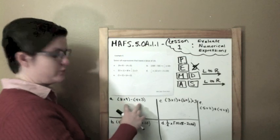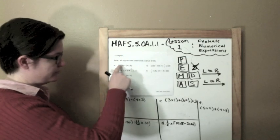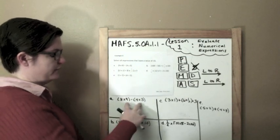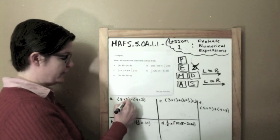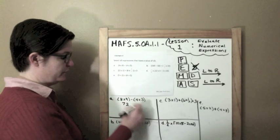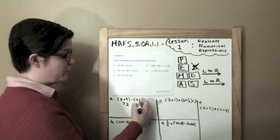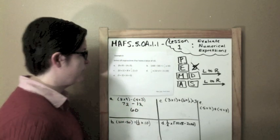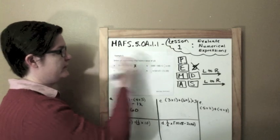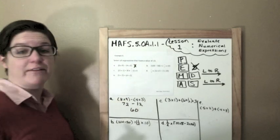All right. So first, I've got two sets of parentheses here. This is a. So I'm going to solve them. And I'm going to go from left to right as well here. So 8 times 9 is 72. 4 times 3 is 12. When I subtract them, I get 60. So this expression does not have a value of 10.